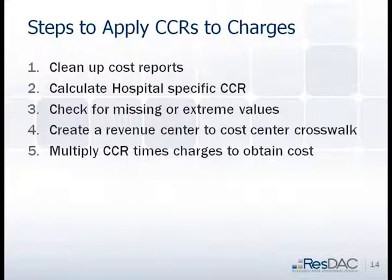Moving into steps for applying a cost-to-charge ratio to charges: there are really only five steps. Step one is clean up the cost reports. Step two is calculate hospital-specific cost-to-charge ratios, either for the hospital or the cost center. Step three is check for missing or extreme values. Step four is create a revenue center to cost center crosswalk. Step five is multiply the cost-to-charge ratio times the charges to get cost.